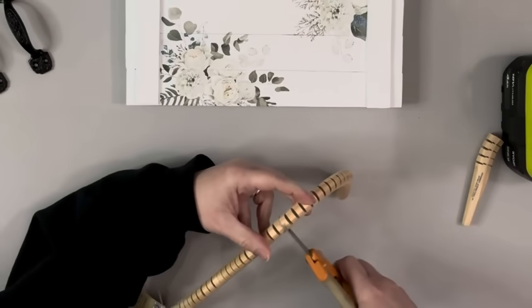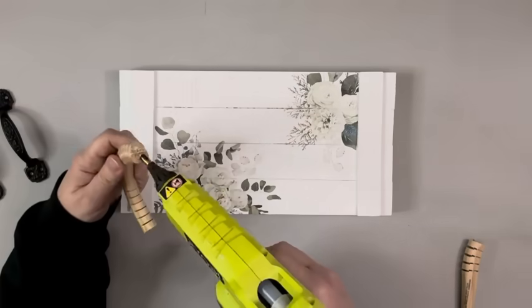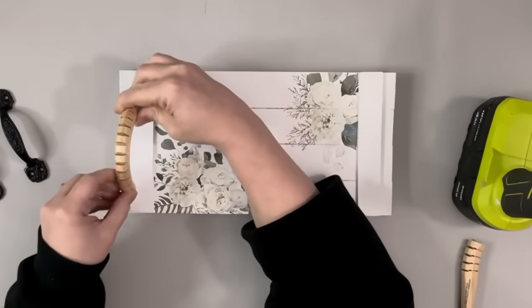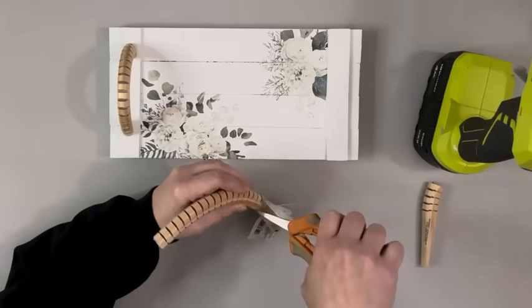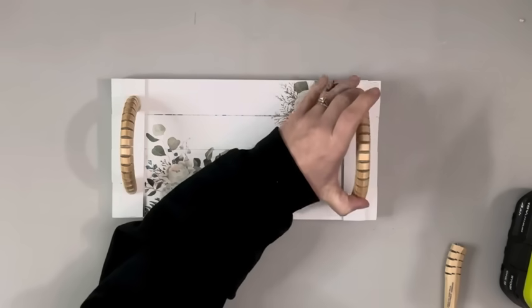And I just used Fisker shears kind of tucking it in those creases and cutting that. A razor blade would work as well. And I was able to get both handles out of one of those snakes and I just hot glued the ends of those right on the tray.